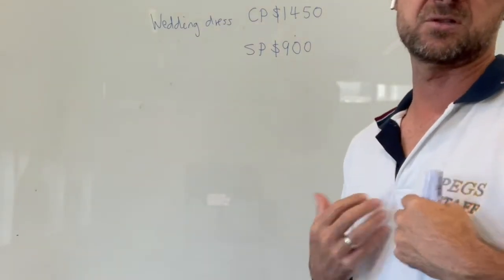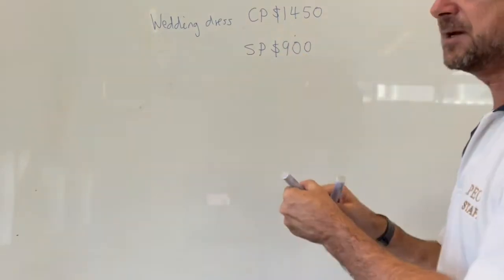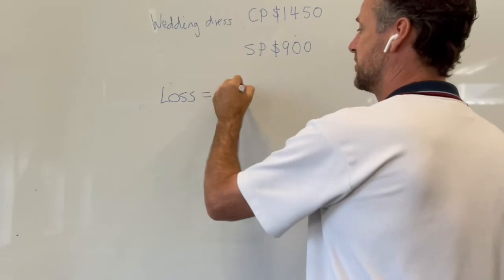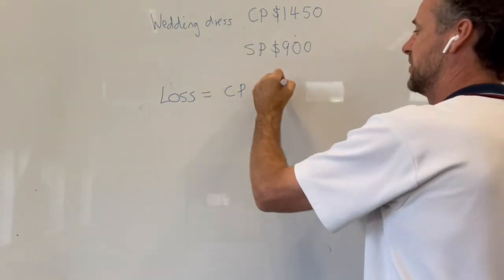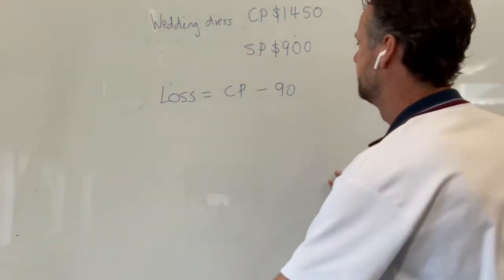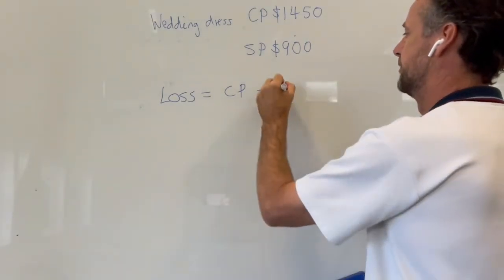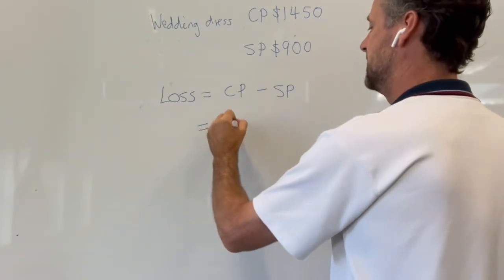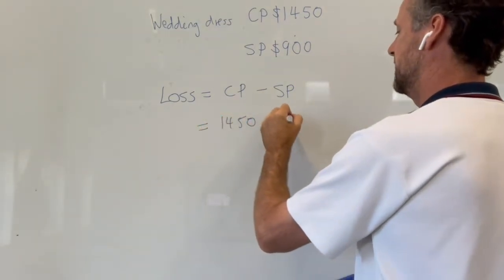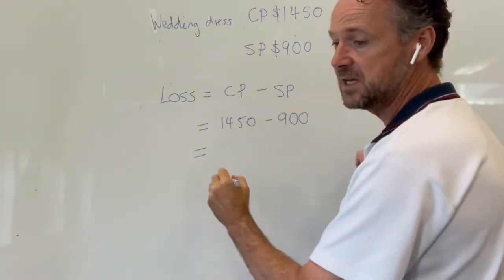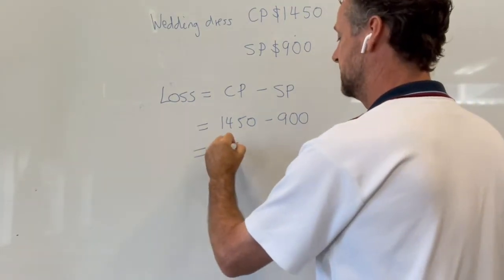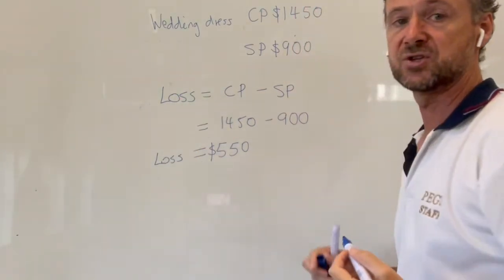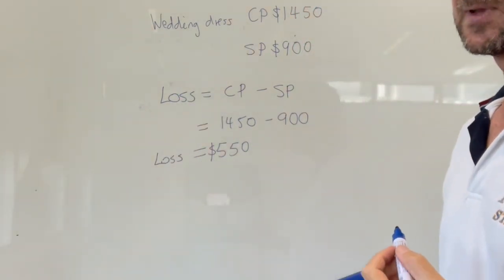We want to work out what the level of loss is. The loss equals the cost price minus the selling price — so that's $1,450 take away $900, giving us a loss of $550. That's how much Laura has lost in the purchase and selling of this dress.